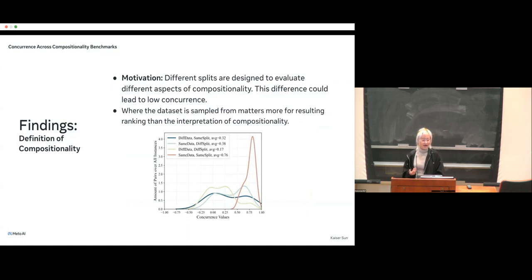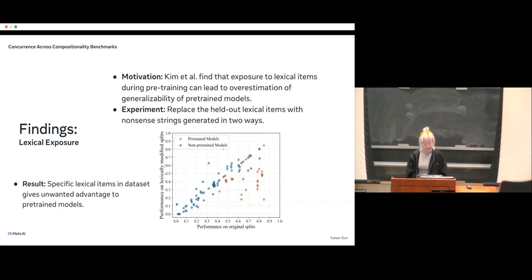The other side we look at is different definitions of compositionality. This is defined by how we split the data set. For example, we may split the data set according to length generalization or compound divergence. We find that, unfortunately, the source of the data set has a larger impact than the notion of compositionality, which is not very well desired, because in the end we want to evaluate compositional generalization instead of the source of the data sets.